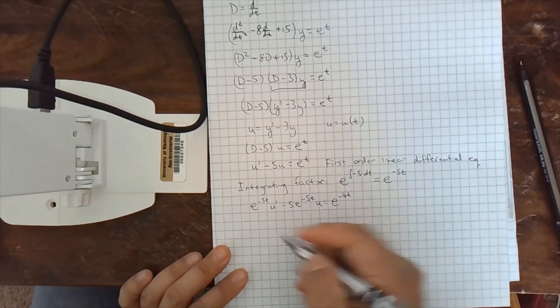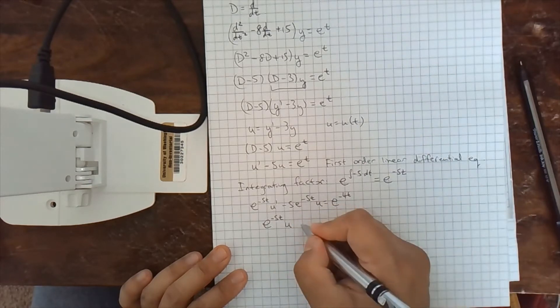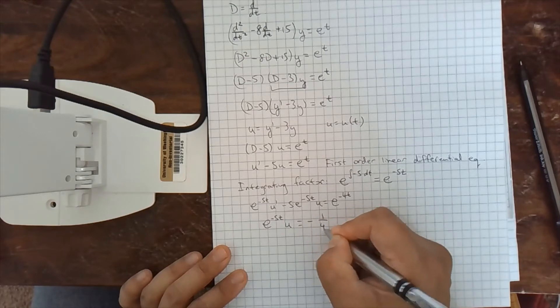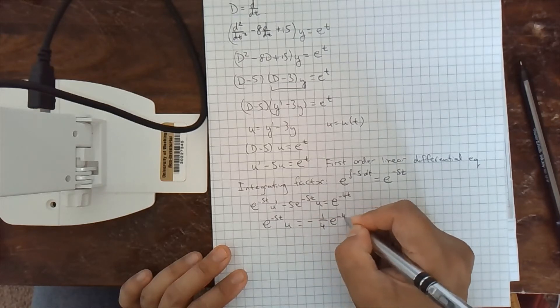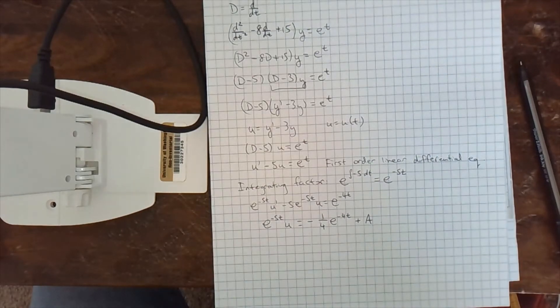Integrate both sides. There should be a product rule on this side. There is e to the minus 5tu equals, and then the integral of this is minus 1 fourth e to the minus 4t plus, and I'm going to start with a for my constants. I don't know how many I'm going to need.